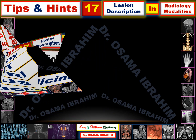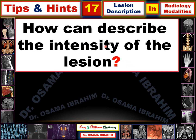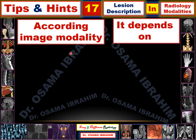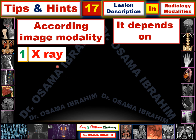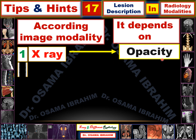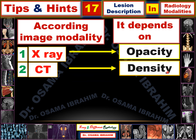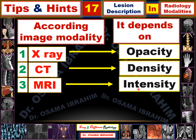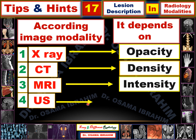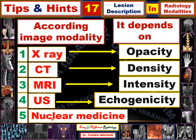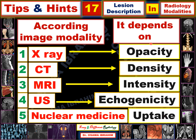The main question of today's presentation is: how can we describe the intensity of lesions according to different imaging modalities? The description of lesions depends on the modality — in X-ray it depends on opacity, in CT it depends on density, in MRI on intensity, in ultrasound on echogenicity, and in nuclear medicine on uptake.